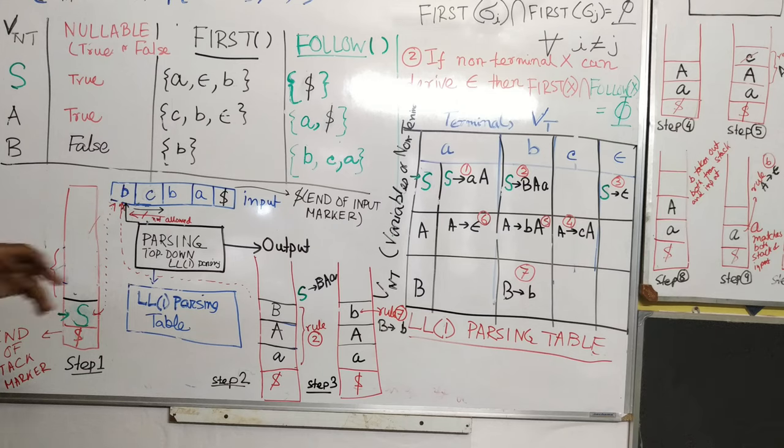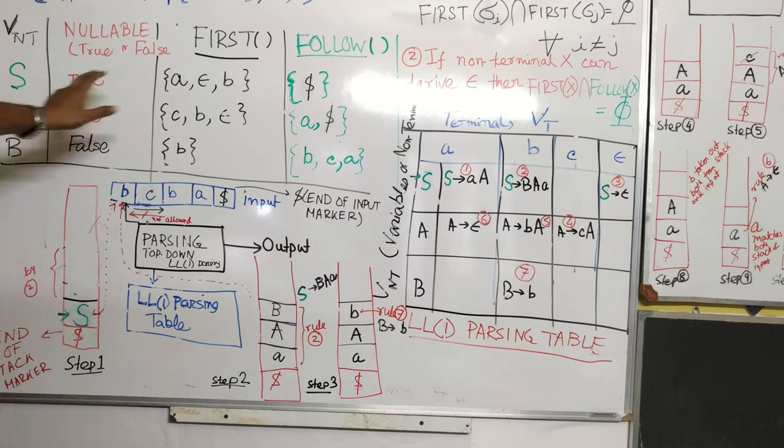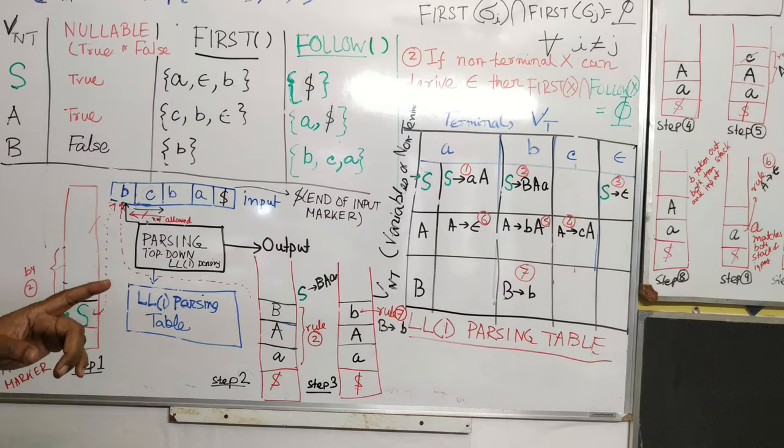First of all, what do we check, which variables are nullable? See here we found it, ace is nullable, true. If it is nullable, we know the first of any nullable variable and follow of that nullable variable intersection.